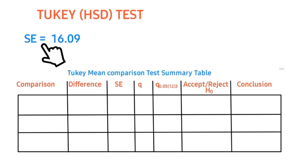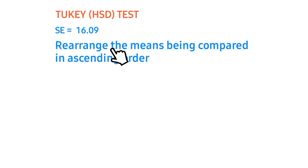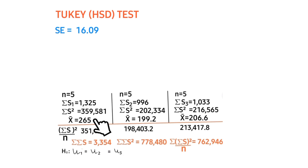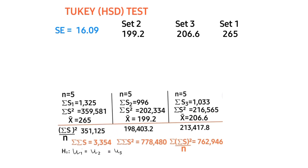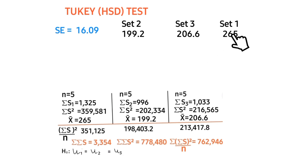We record this value in our summary table. The next step is to rearrange the means being compared in ascending order. From our previous video, these were the means of the three groups: Set 1, Set 2, and Set 3. Rearranging in ascending order, Set 2 has the least mean, followed by Set 3, and the highest mean belongs to Set 1.